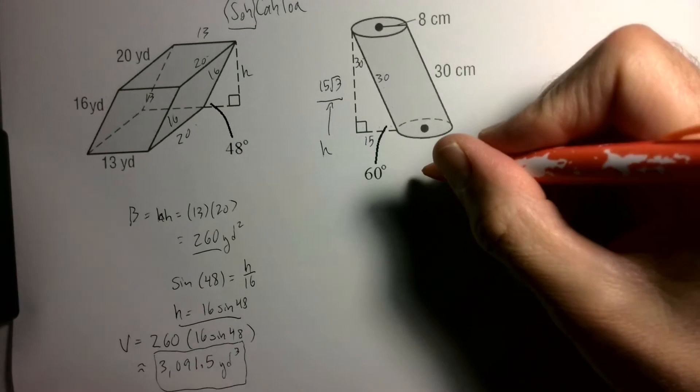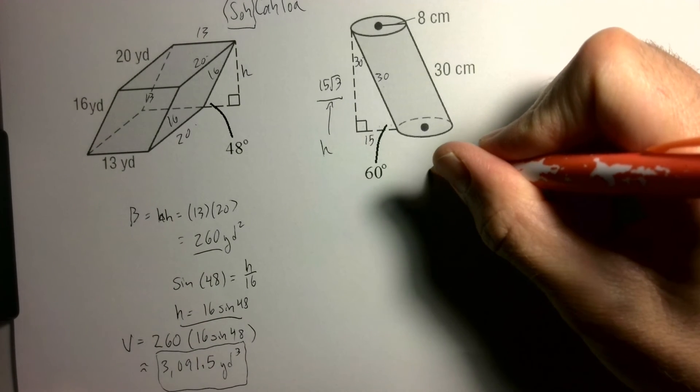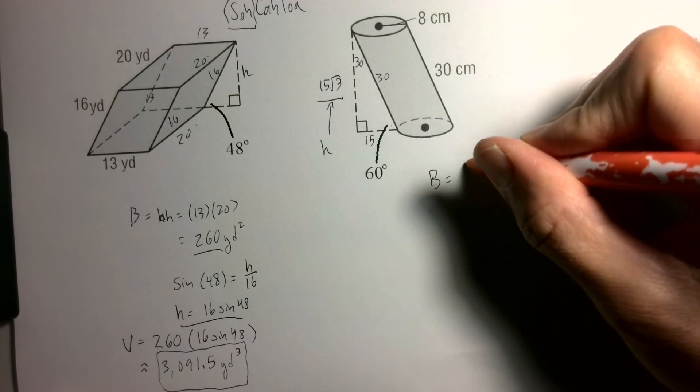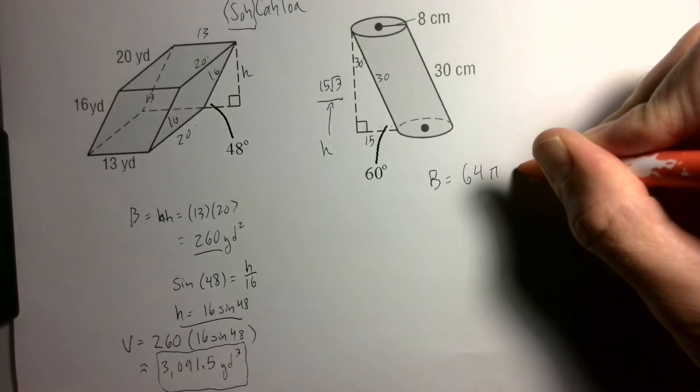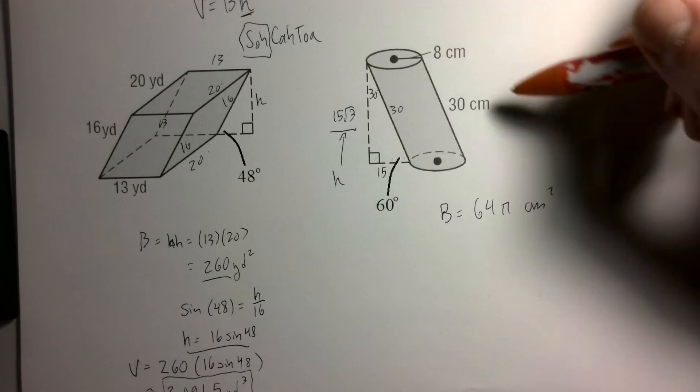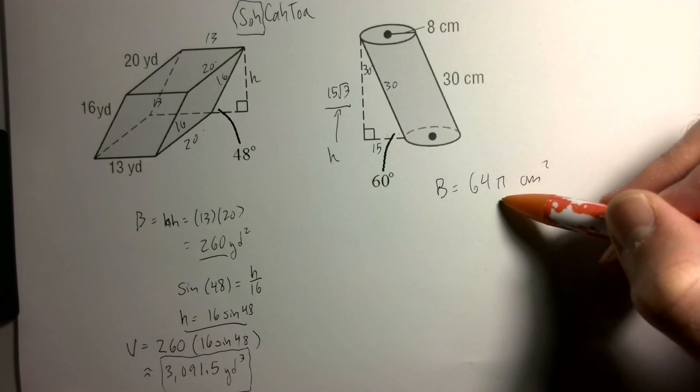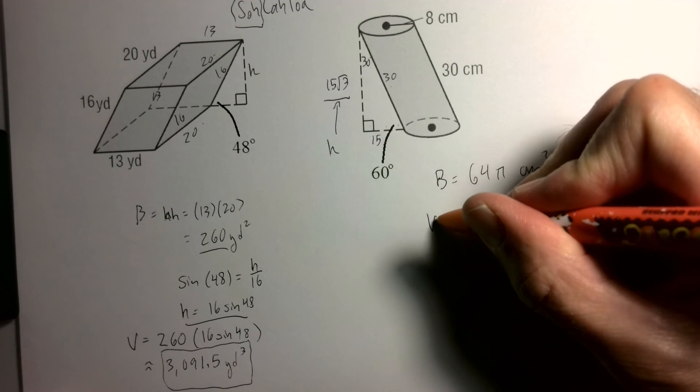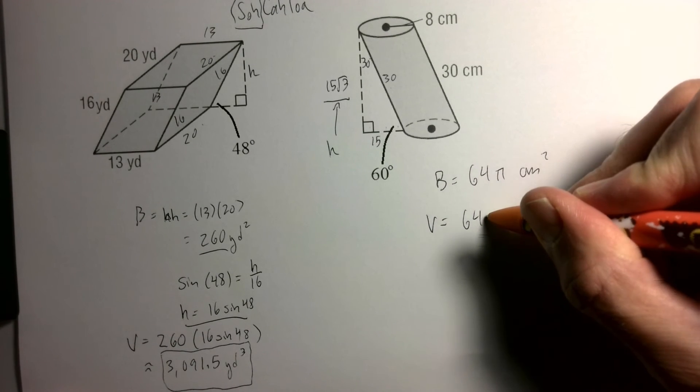Just like every other cylinder, we need to find area of our base. So that should be 64π, because if I have a radius of 8, 8 squared is 64. So area of base is 64π. Volume is going to be that area multiplied by 15√3.